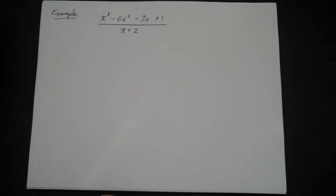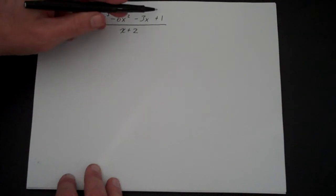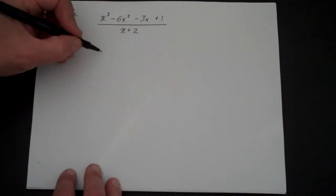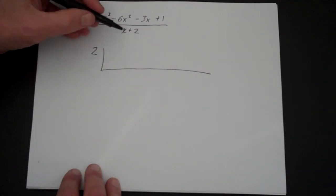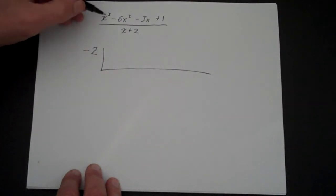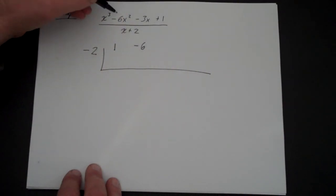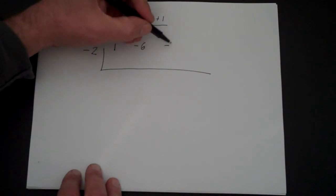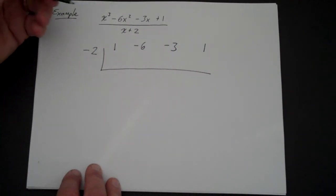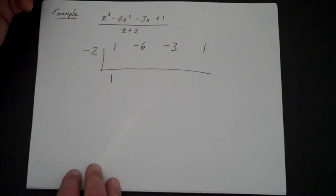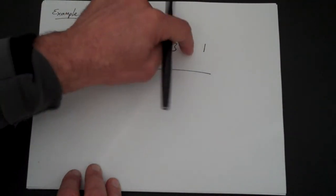Let's do a third example. Sometimes the problem is written differently — it doesn't matter. This is x cubed minus 6x squared minus 3x plus 1, divided by x plus 2. Do your division bar upside down. You put a 2 there, but think — is that positive? No, that's going to be negative 2, because there's a positive 2 in x plus 2, so you put negative 2 there. Then put the coefficients in order — if one is missing put a 0. That's 1, minus 6, minus 3, and 1. The very first step: take the 1 and put it there. Then multiply, put the number, add; multiply, put the number, add; multiply, put the number, add. And you're done.